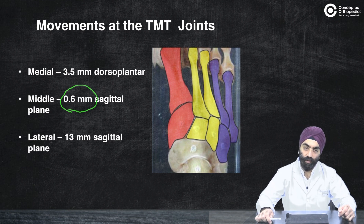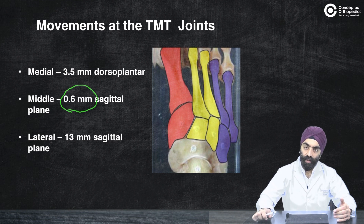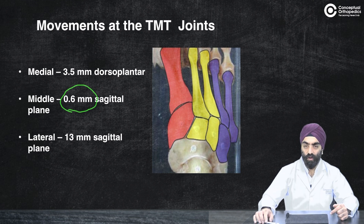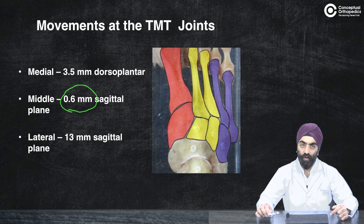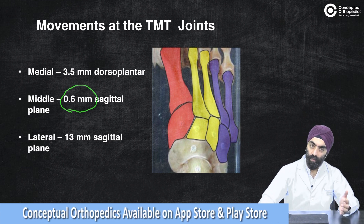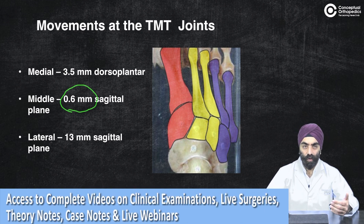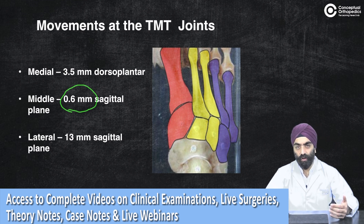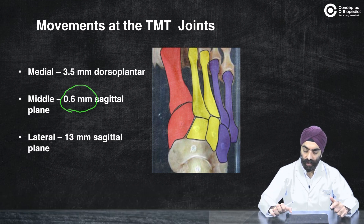The lateral column has 13mm of sagittal plane movement — it is the most mobile and shock-absorbing column of the foot. This lends itself to the concept of never rigidly fixing the lateral column. It is only the medial and middle columns that we rigidly fix surgically. If we fix the lateral column rigidly — with cross screws or bridging plates — we will lose that 13mm of movement, which is critical for the foot to function as a shock-absorbing structure.